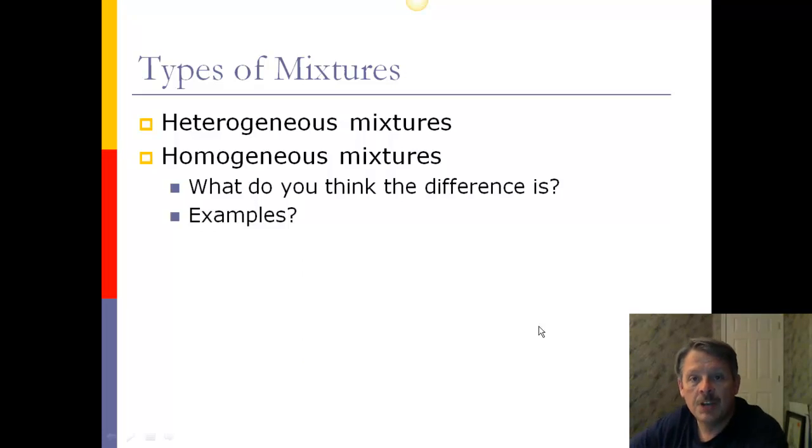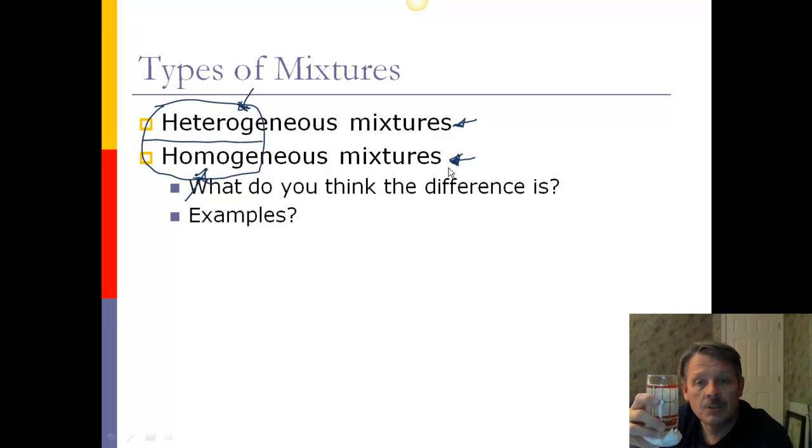Now, we do have two types of mixtures, heterogeneous and homogeneous mixtures. You should be able to look at these words and kind of get a guess as to what they mean based on these prefixes. So, I'll give you a moment, see if you can think of it on your own, and then come back. Hetero versus homo. When you think of homo, you think one. When you think of hetero, you think many. A homogeneous mixture looks like one thing. In a heterogeneous mixture, you can actually see multiple things in it.